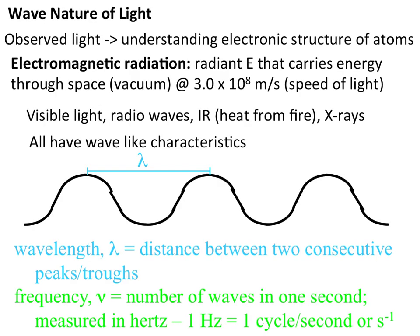By observing the absorbance and emittance of light by atoms, we have been able to come to an understanding regarding the electronic structure of atoms. In order to have a better understanding of the observations we've made regarding the atom, we want to understand the nature of light.